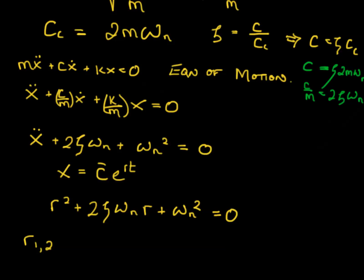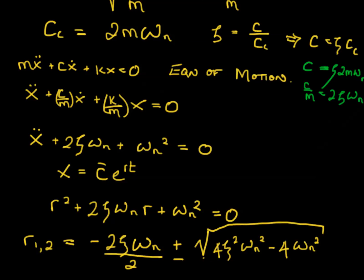And my roots are 1 and 2 equals minus 2 zeta omega n all over 2 plus or minus square root of 4 zeta squared omega n squared minus 4 times omega n squared, all divided by 2.